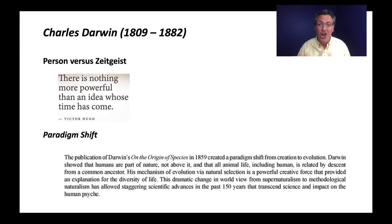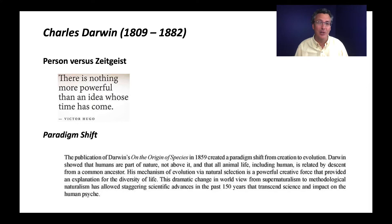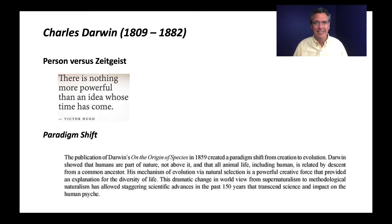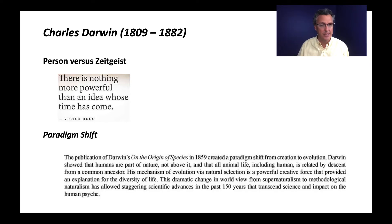Darwin argued that humans are part of nature, not above it. Everything we talked about before — the Scala Naturae, the idea of humans occupying that top rung — Darwin says no, we're just another life form. Our evolution follows the same rules as the evolution of every other animal. Just like Copernicus knocked us down by saying your planet's not the center of the universe, Darwin said our species isn't the center of the planet either — it's just another species. Humans really began by thinking we were so special, and then we have all of these thinkers saying, maybe not. So a big-time paradigm shift. He caused this paradigm shift in terms of how we think about how the variety of life came to exist, but he also impacted a number of other paradigm shifts along the way.